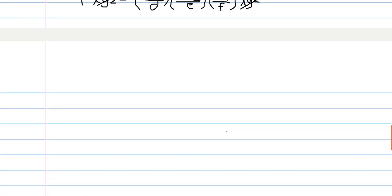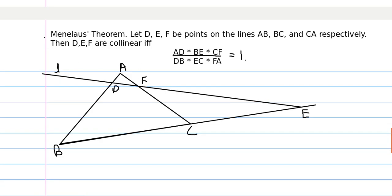Now I want to go through... I won't go through the entire proof but there is another classical theorem that you can prove using barycentric coordinates. So we have Menelaus' theorem which states that if D, E, and F are points on the lines A, B, B, C, and C, A respectively...